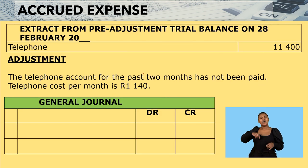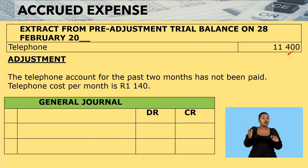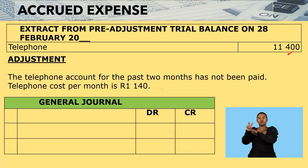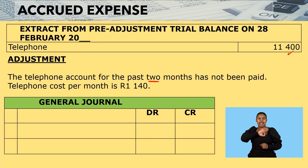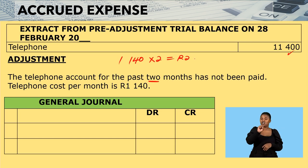We have another activity. Extract from the pre-adjustment trial balance on 28 February — telephone: $11,400. This is an expense. The adjustment reads: the telephone account for the past two months has not been paid. Telephone cost per month is $1,140. So $1,140 multiplied by two months means I owe telephone $2,280 for the two months.